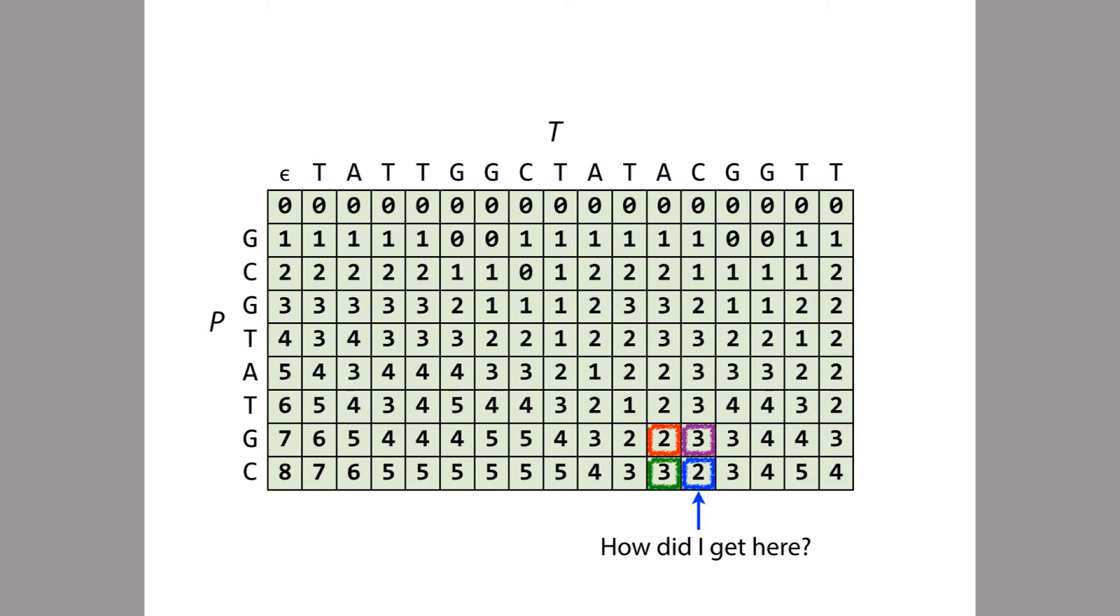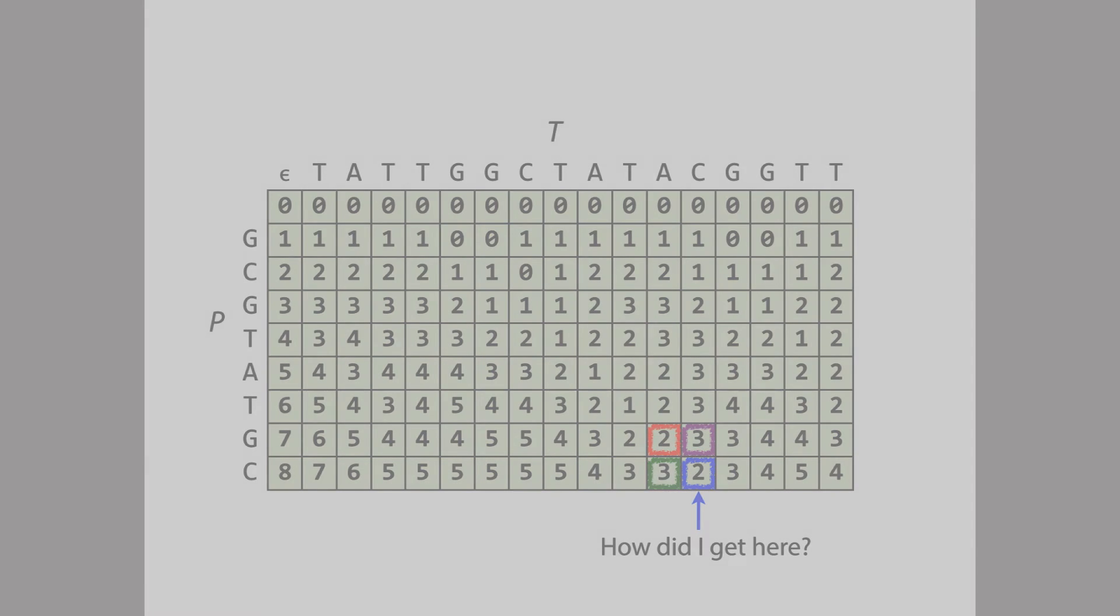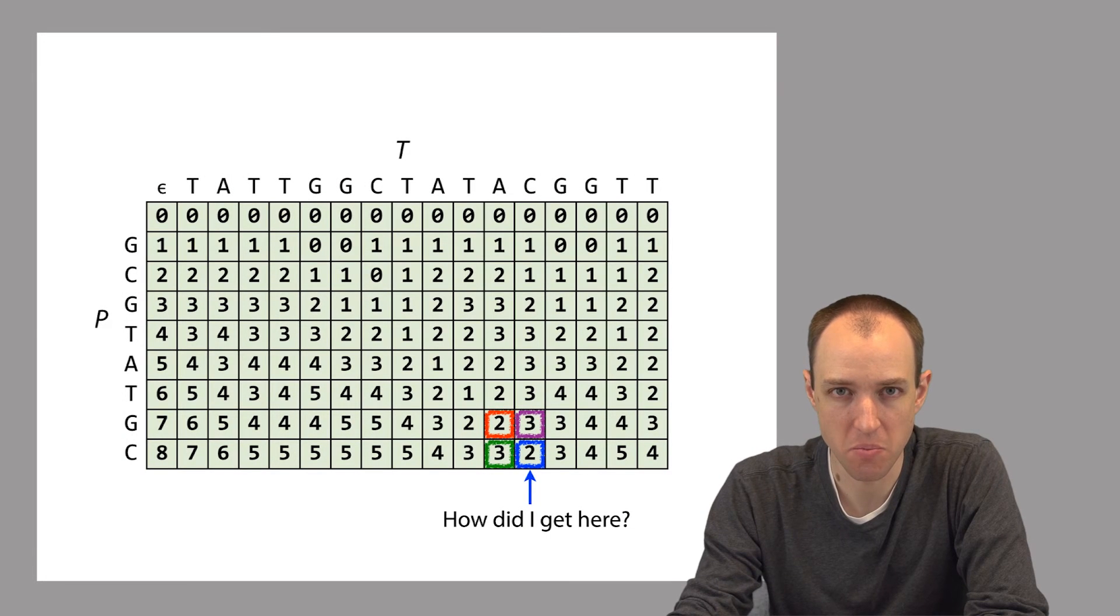That tells us that P matches somewhere with two edits. What we don't know yet is exactly where that substring of T is that it matches. To answer that we first have to answer the question how did we get here? How did we get down to that value in the bottom row of 2?